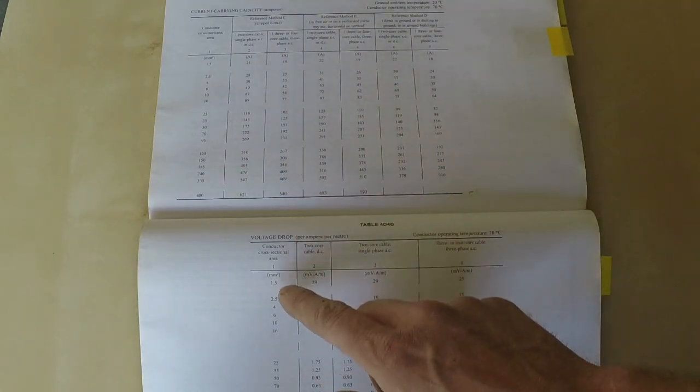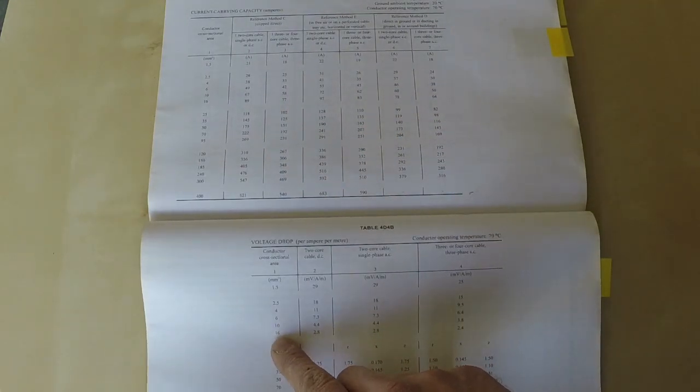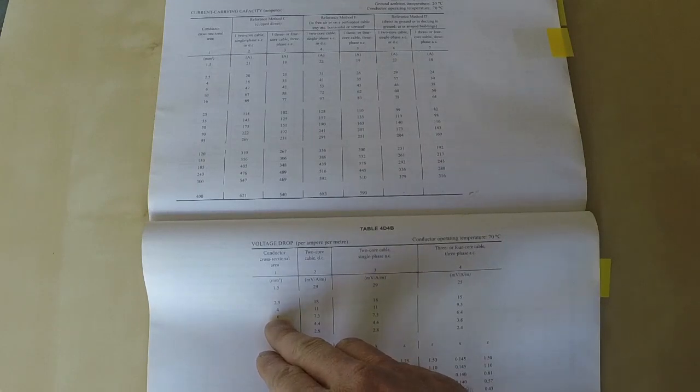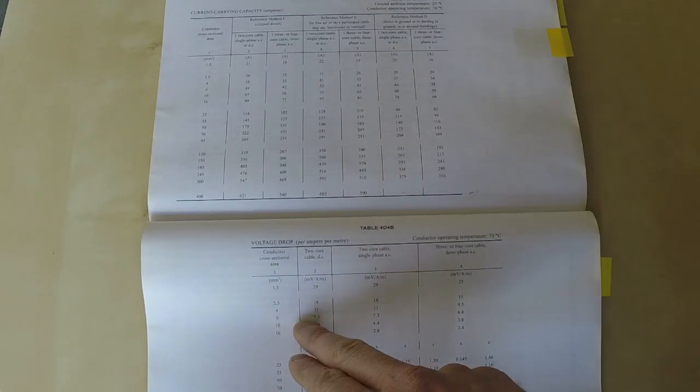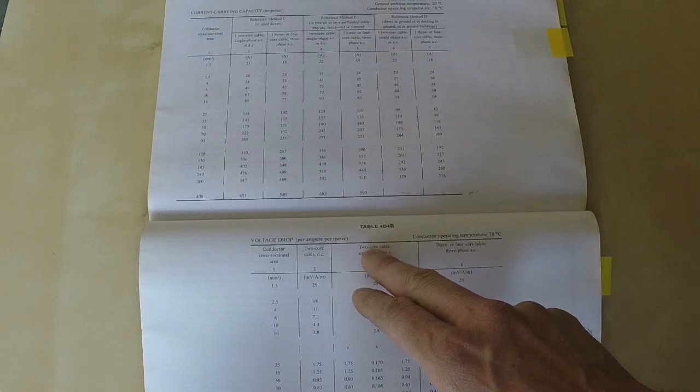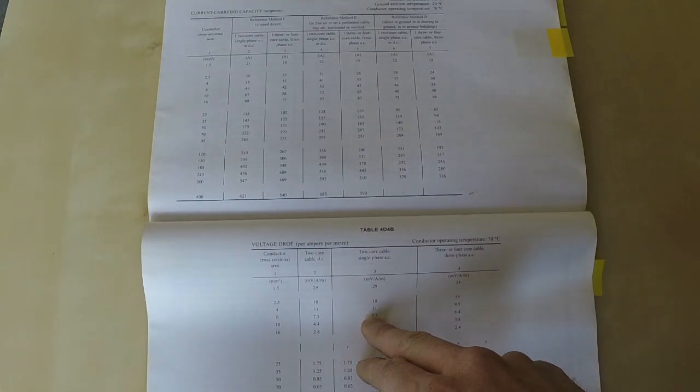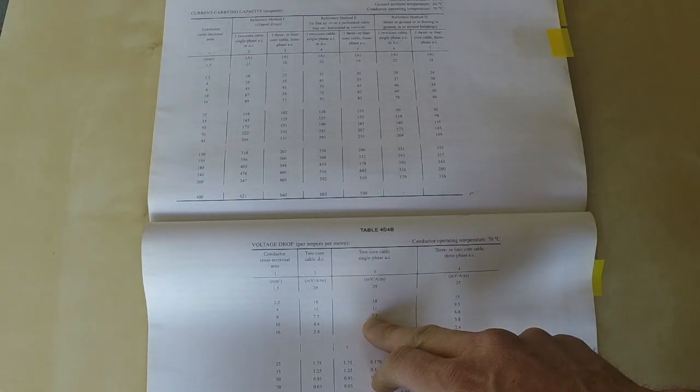Then you go to the table below, which is the volt drop table, and again you find 6 mil and go across to the two core single phase, which is there. That's 7.3 millivolts drop per amp per meter.